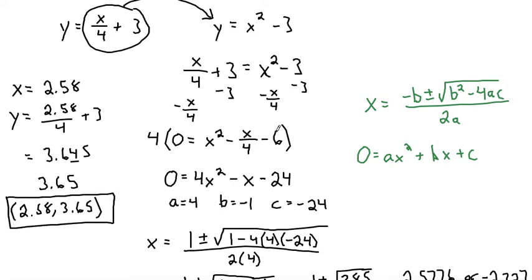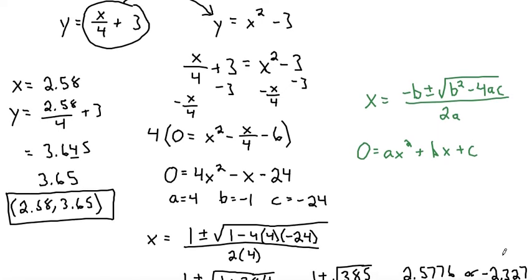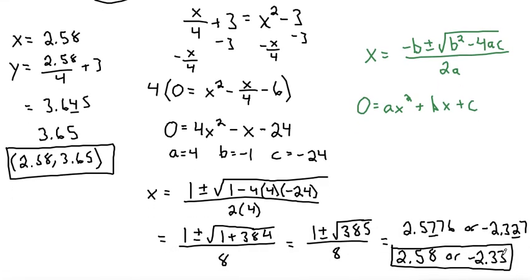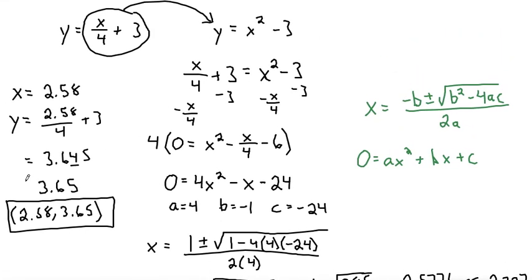We can do that with the other point as well, with the other answer being negative 2.33. We can plug that in. That's the x value. Y is equal to negative 2.33 over 4 plus 3.